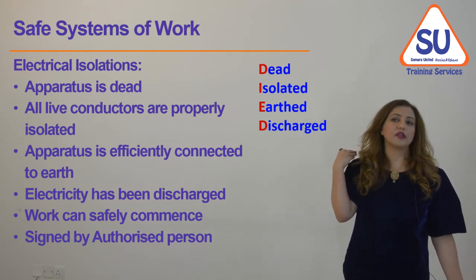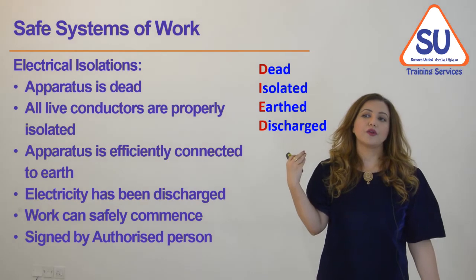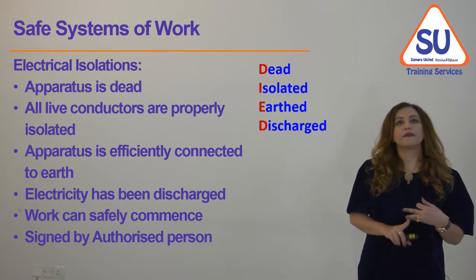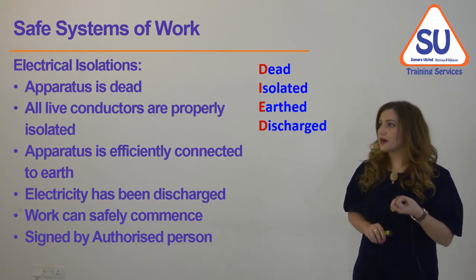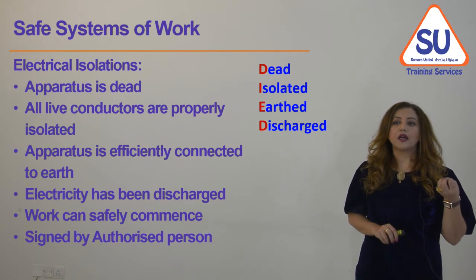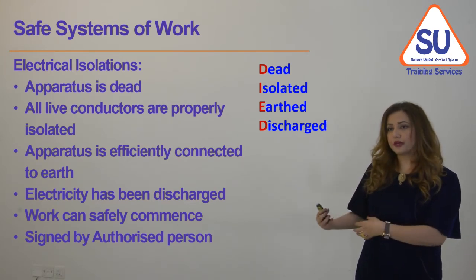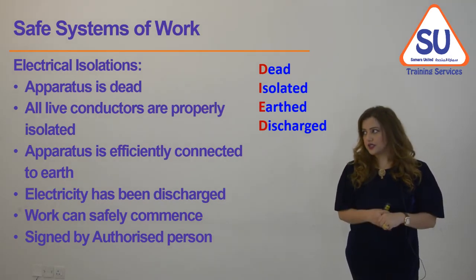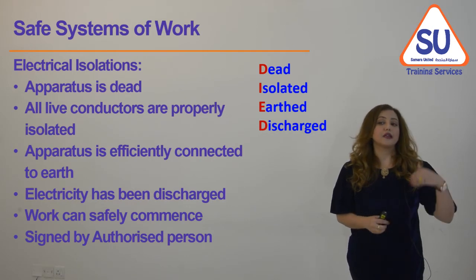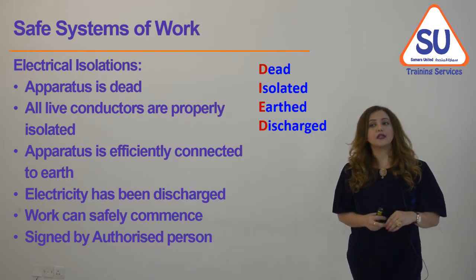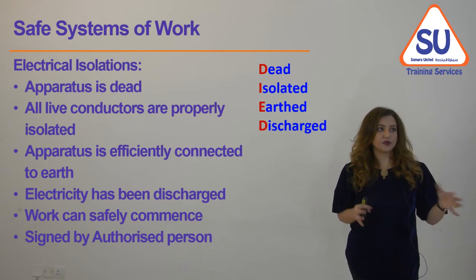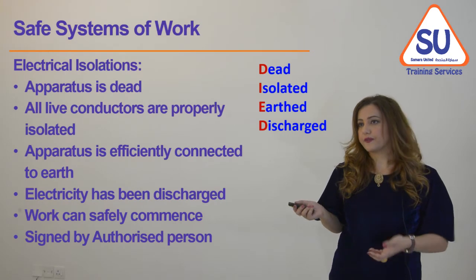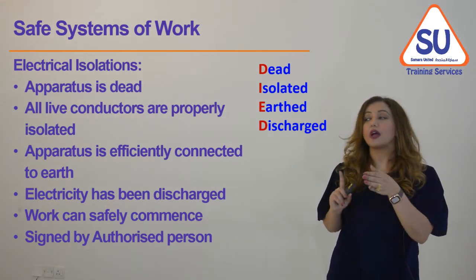What is the safe system of work for electrical safety? It involves electrical isolation — making sure the equipment is dead. All live conductors must be properly isolated and properly earthed, all electricity has been discharged so there is no residual electricity in the equipment, and then a decision can be made that work can safely commence. This must be signed off by an authorized person — a permit-to-work system should be applied. In summary: dead, isolated, earthed, and discharged.